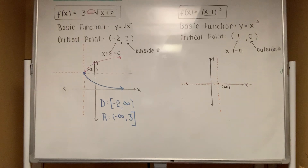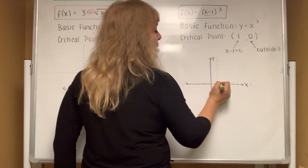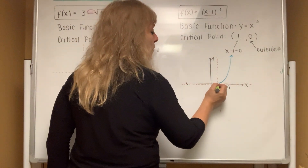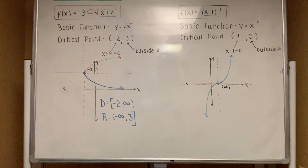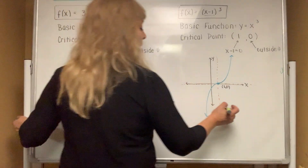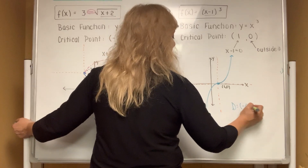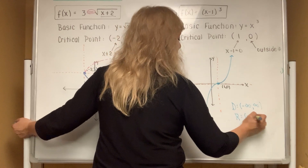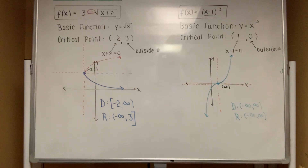You have to know what x³ looks like — it's the vertical snake. Start at the critical point and draw one half of the snake going up on the right, then go back and draw the other half going down on the left. All snakes have a domain of negative infinity to positive infinity and a range of negative infinity to positive infinity. And that takes care of this page.